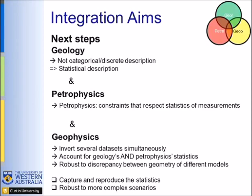Here are some possibilities to advance integration further. For geology, instead of using a categorical or discrete description, we move toward a more statistical description of the model. For petrophysics, the same — moving toward honoring the statistics of the measurements rather than being as close as possible to predefined values. For geophysics, inverting several datasets simultaneously while accounting for the statistics of both geology and petrophysics at the same time, and being robust to cases of discrepancy, such as between magnetic susceptibility and density contrast.